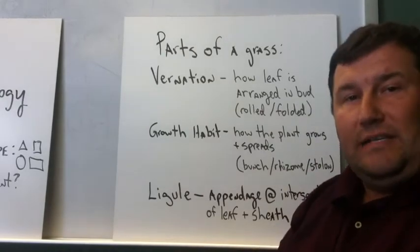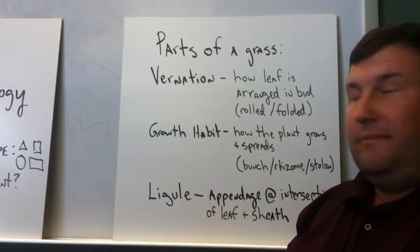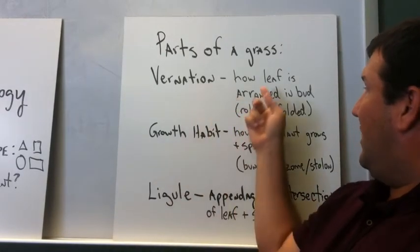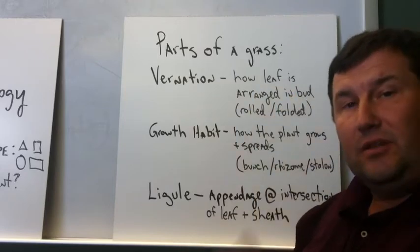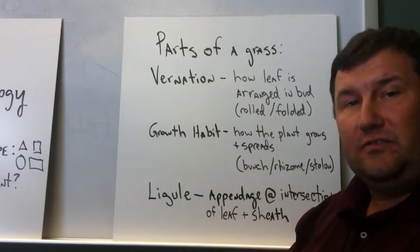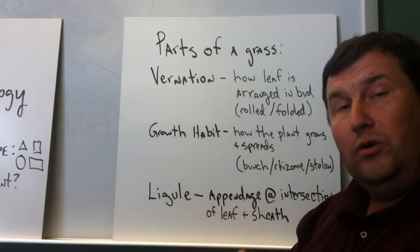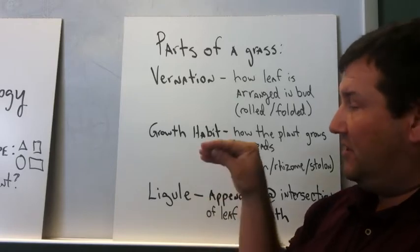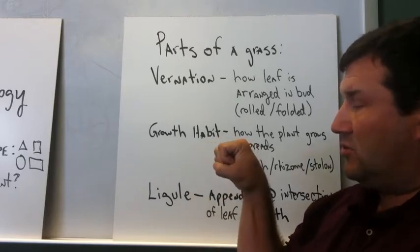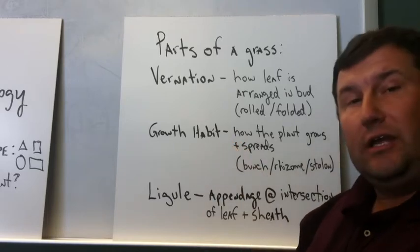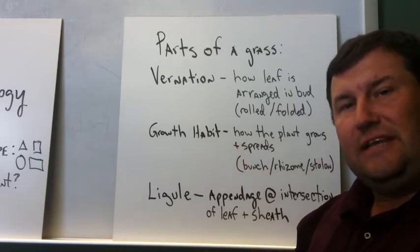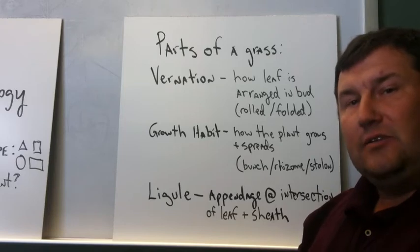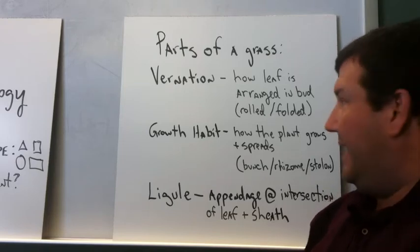There's several parts of a grass that we need to familiarize ourselves with. The first one is vernation, or how the leaf is arranged in the bud, and there's basically two key characteristics for vernation. It's either rolled or it's folded, so the leaf is either folded like a V or it's rolled up, and we'll take a look at live grass samples to start seeing these structures firsthand as we get into the lab portion of the class.